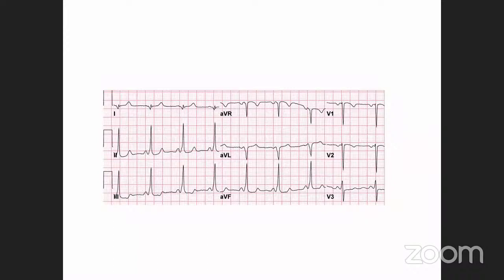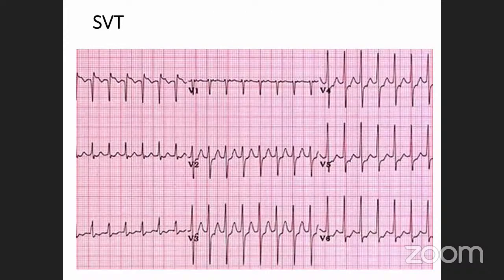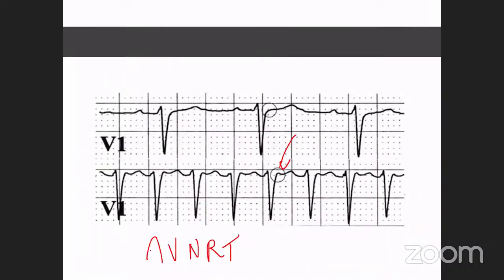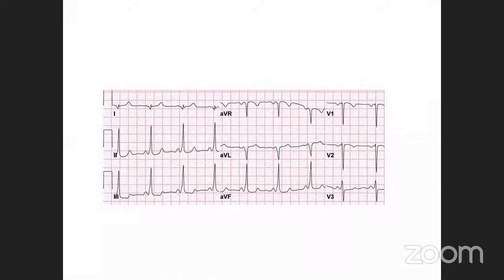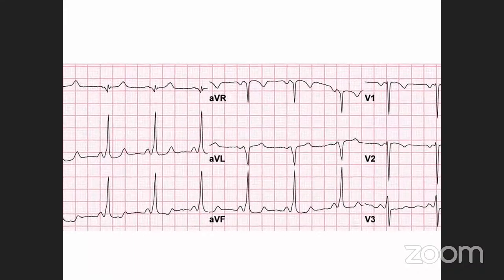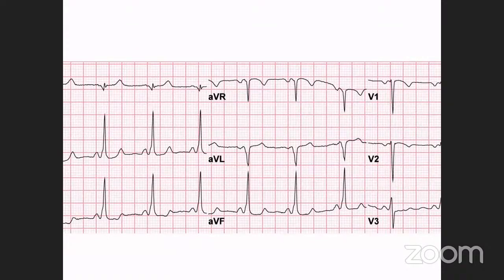To summarize the general ECG pattern of PSVT: absence of P waves, narrow QRS complexes, tachycardia with a very fast ventricular rate, and monotonously regular complexes all looking similar to each other. Now, can you look closely at this ECG and tell me the abnormality?